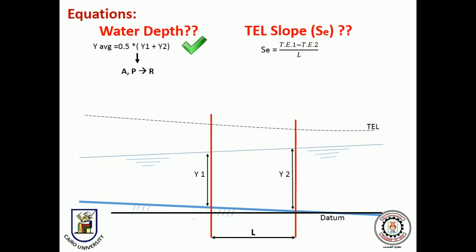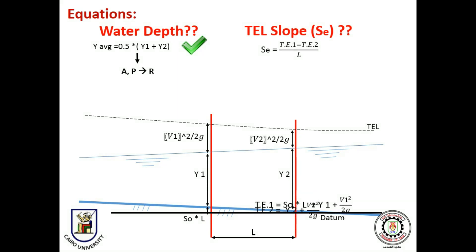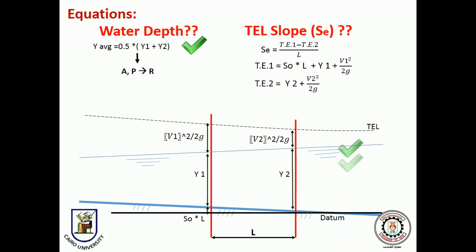To get total energy at section 1: the potential head equals bed slope times the length; the pressure head is the water depth at section 1; and the velocity head is V1 squared over 2g. By the same concept, energy at section 2 can be obtained. So total energy 1 and total energy 2 can be expressed by those equations, and finally SE can be obtained. An important note: the length between the two sections shall be 2 to 4 meters to allow for a measurable change in total energy, and to get an average water depth representative of the section.